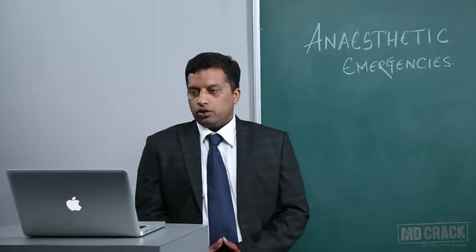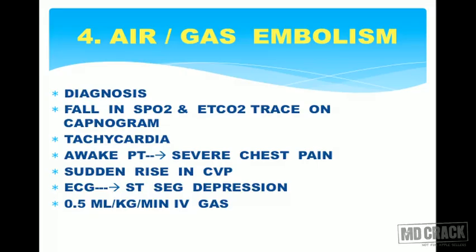Coming to diagnosis of air or gas embolism: there will be sudden fall in SpO2 or ETCO2 trace on capnogram, sudden tachycardia, and if the patient is awake, severe chest pain. There will be a sudden rise in central venous pressure and ECG shows ST segment depression. Even 0.5 ml per kg per minute of IV gas can lead to all these symptoms, so the anesthetist should be awake and alert.